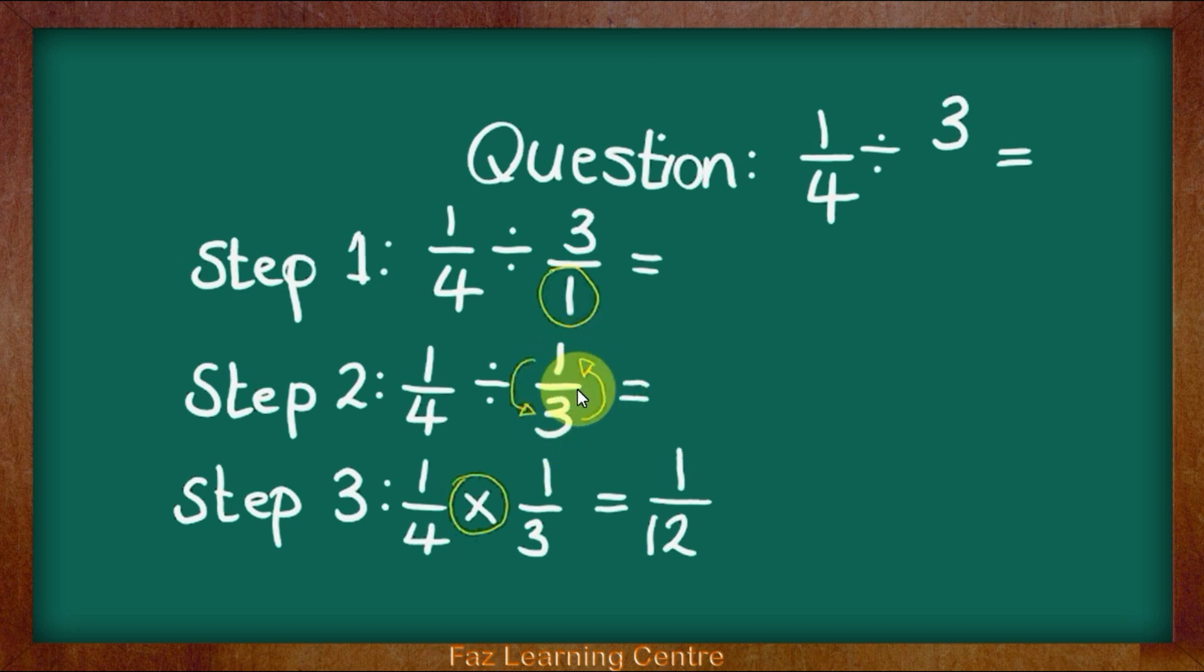Now the last step. You cannot solve the question until you have completed the 3 steps. Step 3 is changing the division sign into a multiplication.